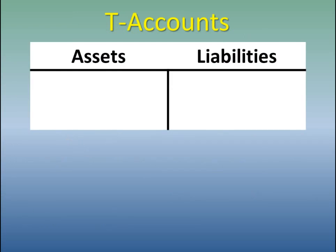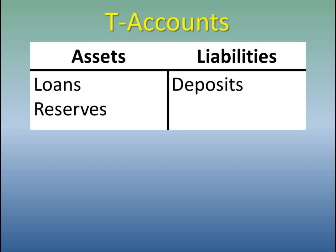One way that banks keep track of their assets and liabilities is through the use of what's known as a T-account. This T-account helps us keep track of what's going on as money leaves and comes into the bank. Assets are a claim on future income, and liabilities are a responsibility to pay somebody back in the future. From a bank's perspective, deposits are liabilities because that's somebody else's money. Assets for the bank are loans and reserves. Loans are an asset because the bank has a claim on getting paid back.